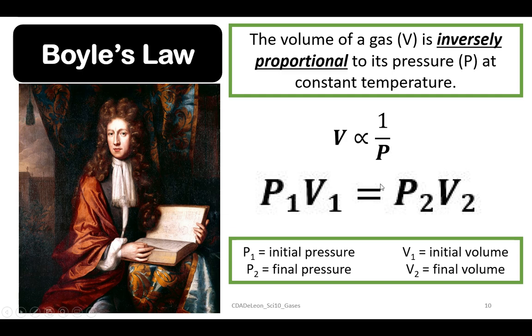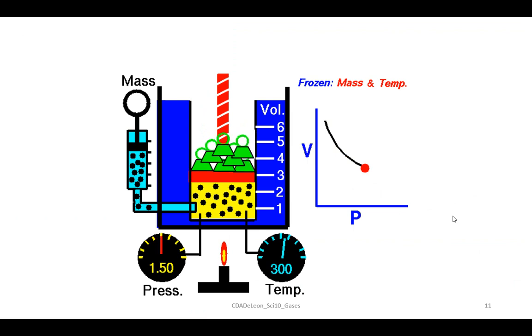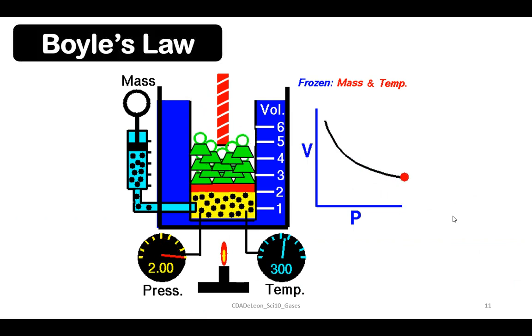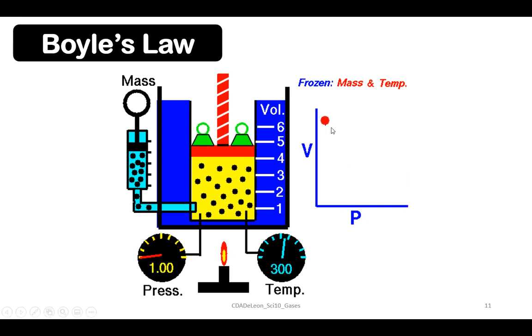We have the general formula: initial pressure multiplied by the initial volume is equivalent to the final pressure multiplied by the final volume. So P₁ times V₁ equals P₂ times V₂. If we use a graph, this is how inversely proportional looks like. This is volume and pressure.